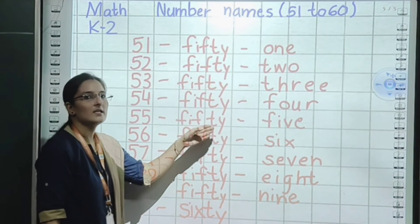Next: 57. F, I, F, T, Y — fifty, small sleeping line, S, E, V, E, N — seven. 57 is fifty-seven. Next number: 58. F, I, F, T, Y — fifty, small sleeping line, E, I, G, H, T — eight. 58 is fifty-eight.